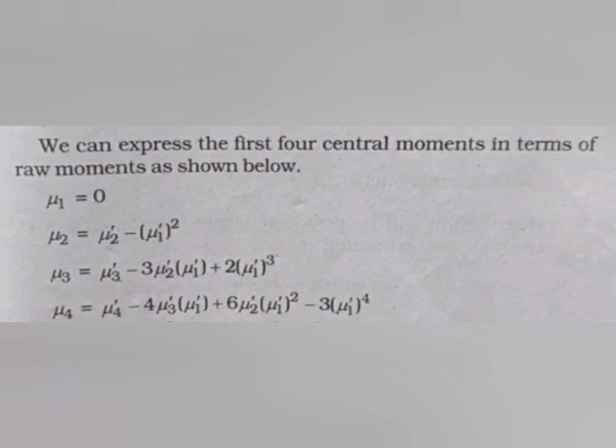The first four central moments are: Mu 1 equals 0. Mu 2 equals mu 2 dash minus mu 1 dash squared. Mu 3 equals mu 3 dash minus 3 mu 2 dash mu 1 dash plus 2 mu 1 dash cubed. Mu 4 equals mu 4 dash minus 4 mu 3 dash mu 1 dash plus 6 mu 2 dash mu 1 dash squared minus 3 mu 1 dash raised to 4.